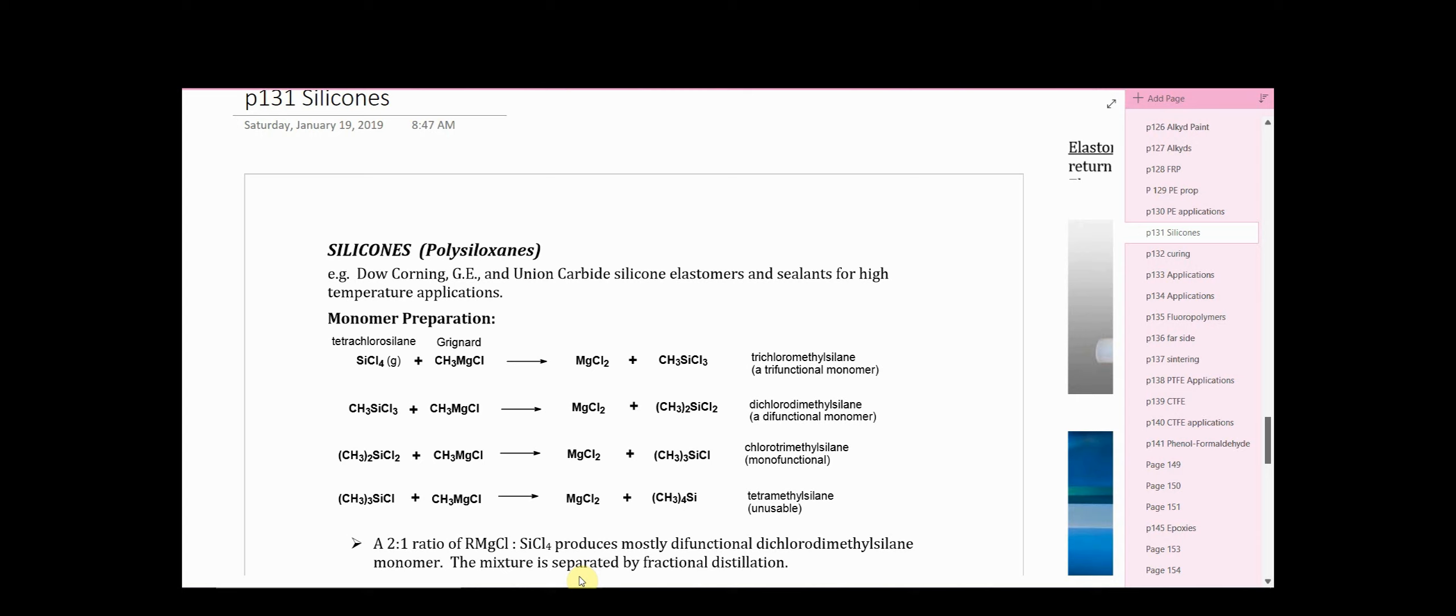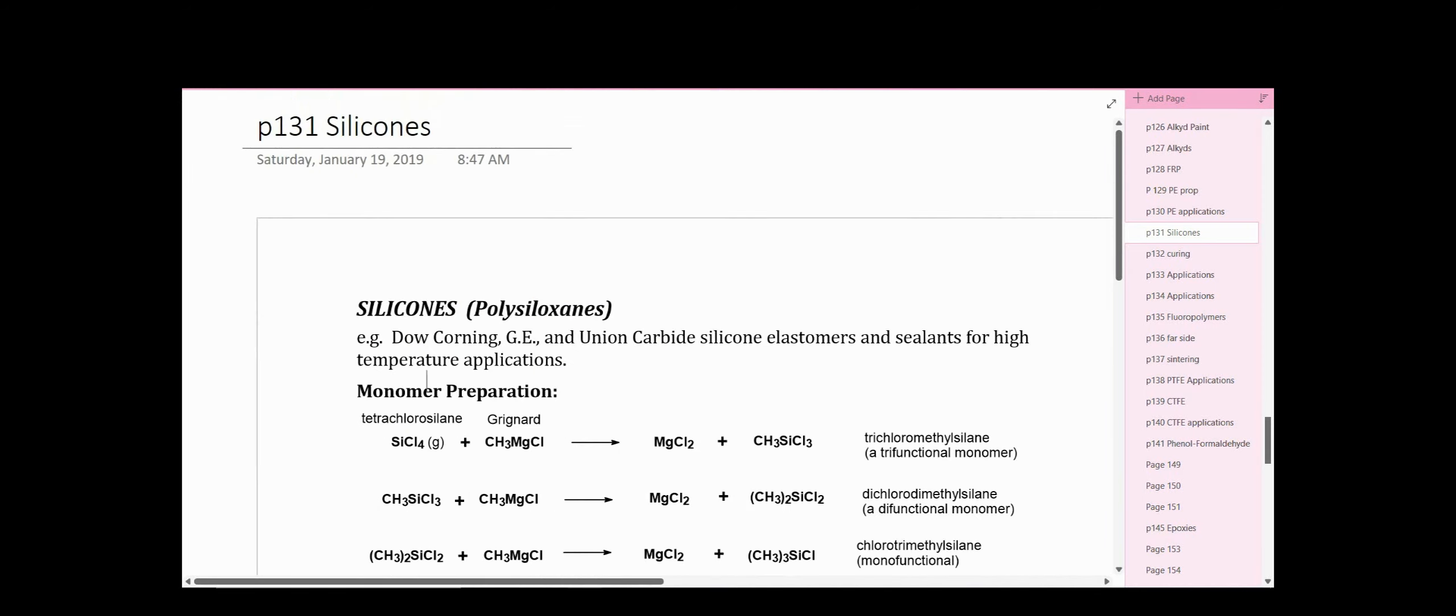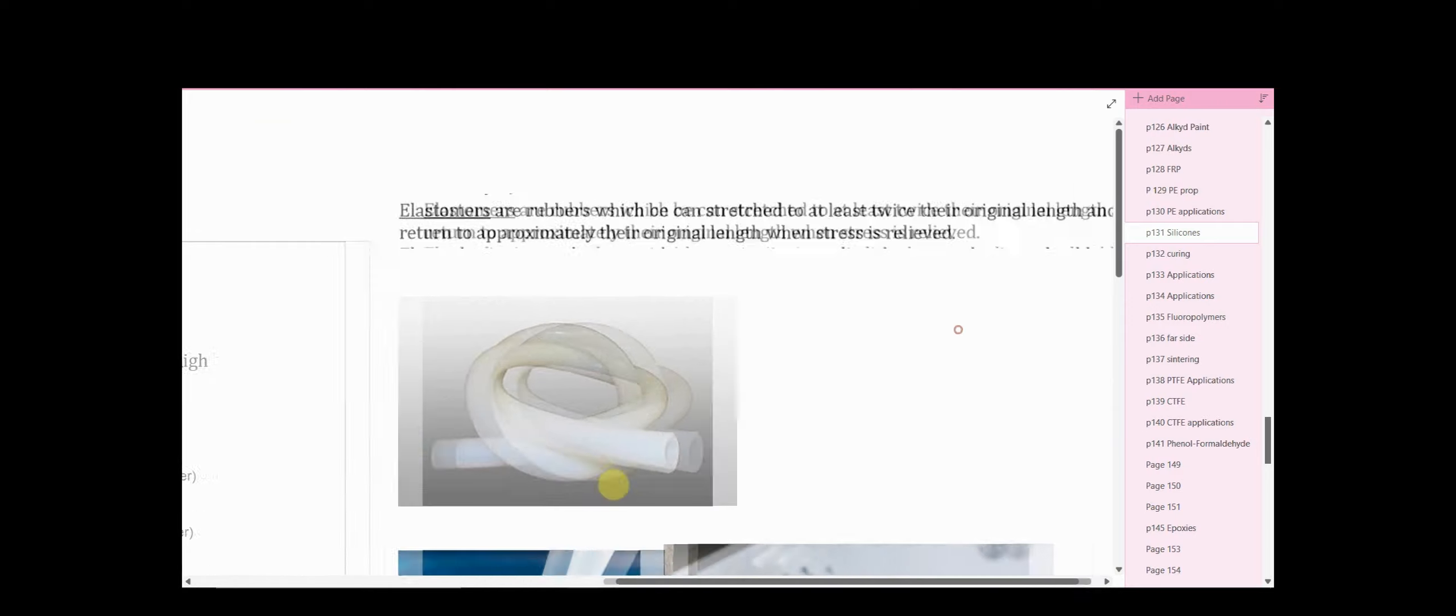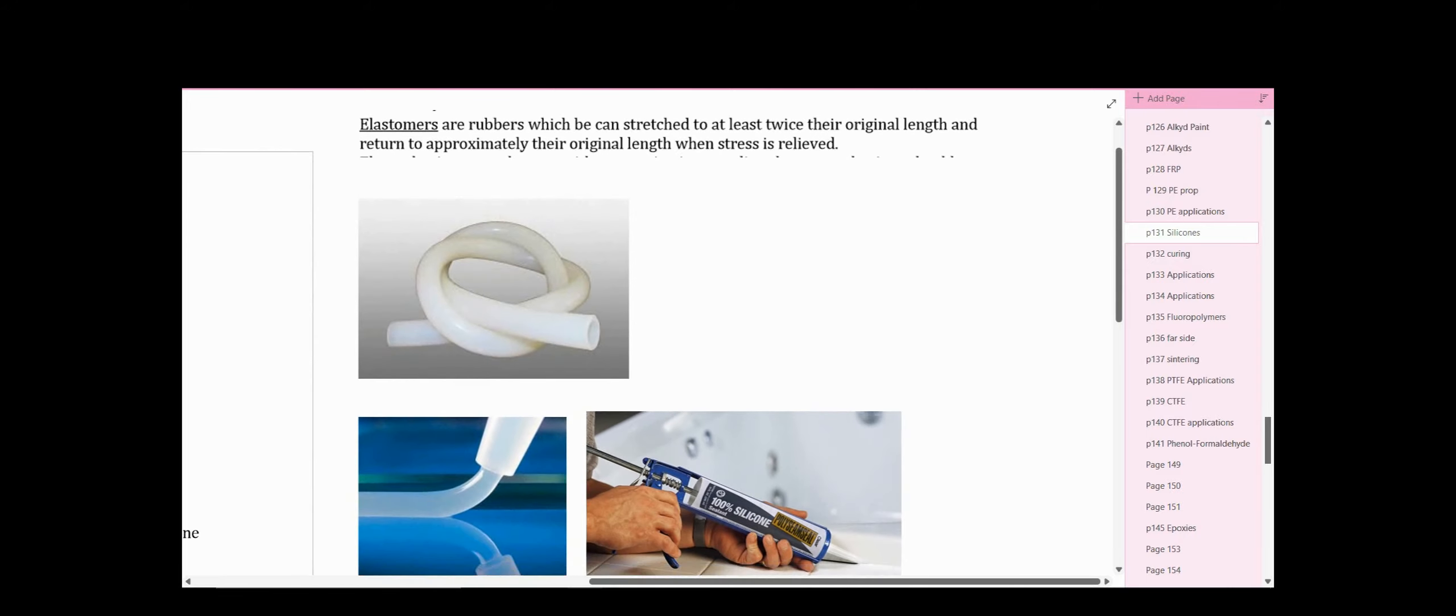Polymer chemistry - in this short lesson we'll look at silicones, their preparations, properties, and applications. Silicones, also known as polysiloxanes, are made by companies like Dow Corning, GE, and Union Carbide as silicone elastomers and sealants for high temperature applications. Recall what an elastomer is - the rubbers that can be stretched to at least twice their original length and return to approximately their original length when the stress is relieved.